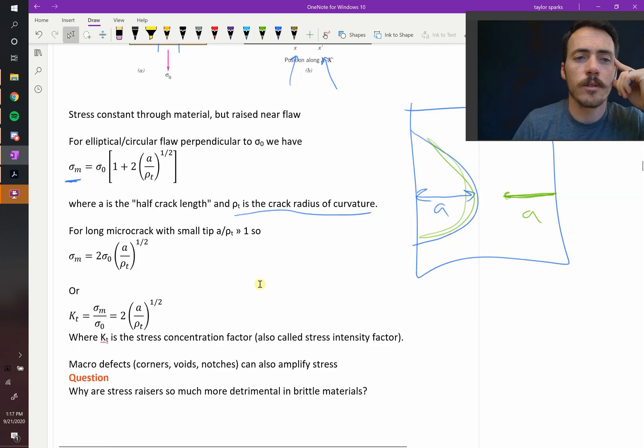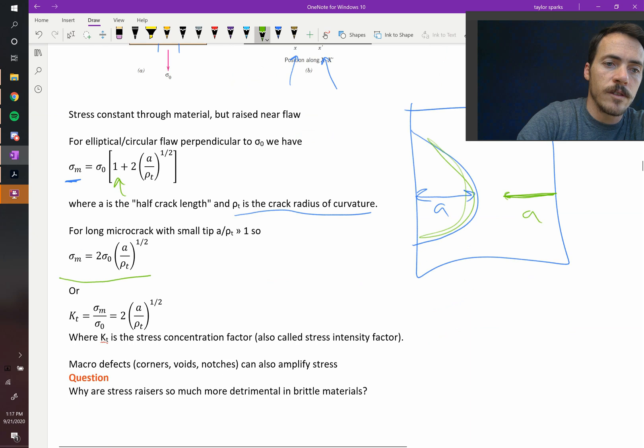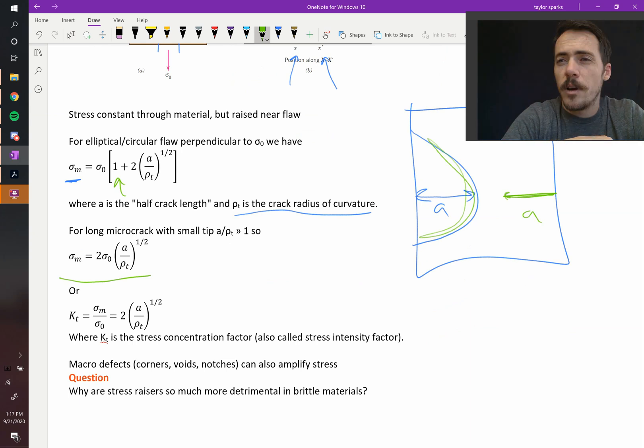In fact, if you're in the limit of A over rho T being large, you can neglect this term right there, and this simplifies to this expression. Your maximum stress is equal to two times your applied stress, multiplied by the square root of the half crack length divided by the crack tip radius.